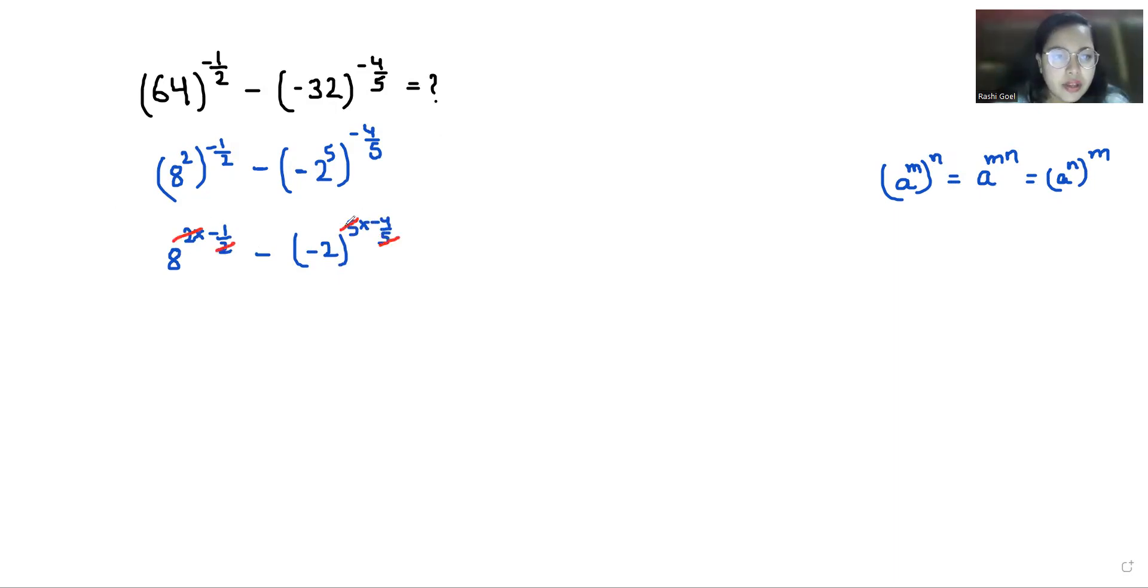So what is left: 8 power negative 1 minus negative 2 power minus 4. According to exponent rule, a power minus m we can write it as 1 by a power m, so it becomes 1/8 minus 1 by negative 2 whole power 4.